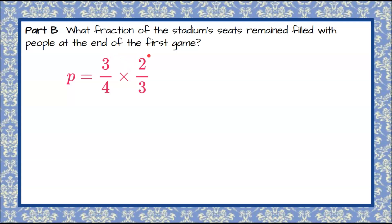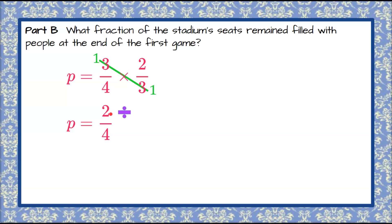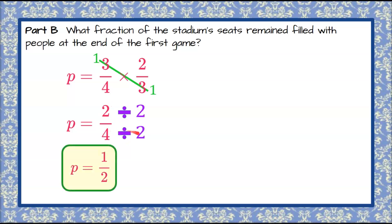I'm going to show you two ways to approach this. The first way: I see both the numerator and the denominator of our product have a factor of three. So I'm going to simplify. Three divided by three is one. One times two is two. Four times one is four — so multiply the numerators, then multiply the denominators. I see this can still be simplified; both the numerator and the denominator have a factor of two. So divide the numerator by two and the denominator by two: two divided by two is one, four divided by two is two, telling me that P, the people in their seats at the end of the first game, is one-half.